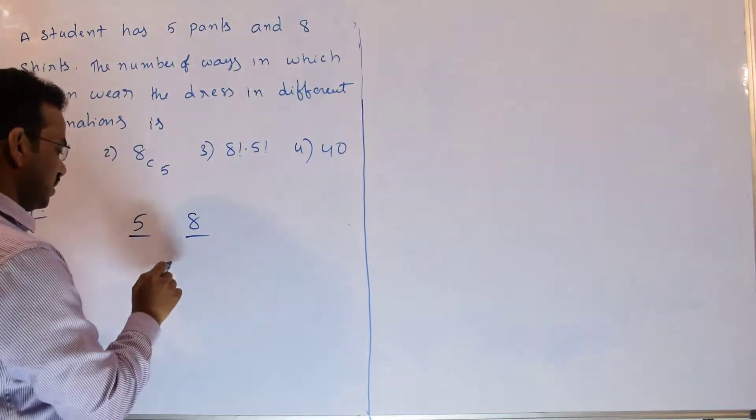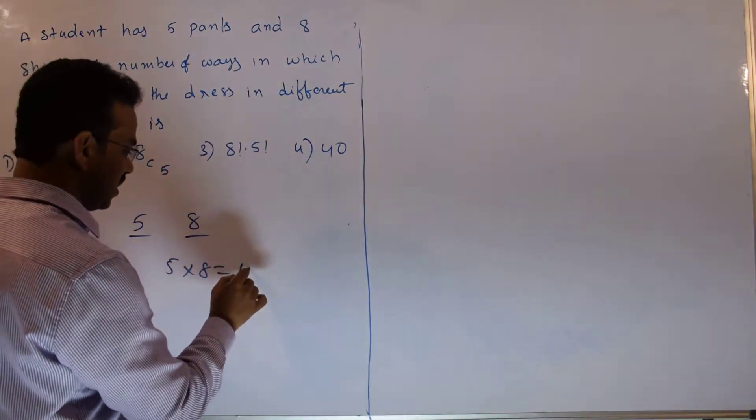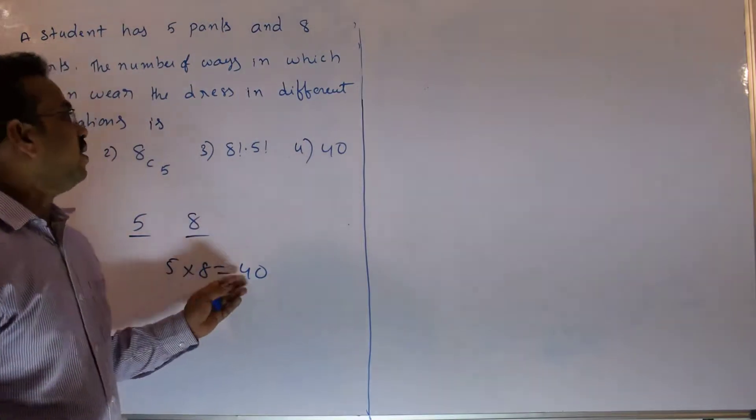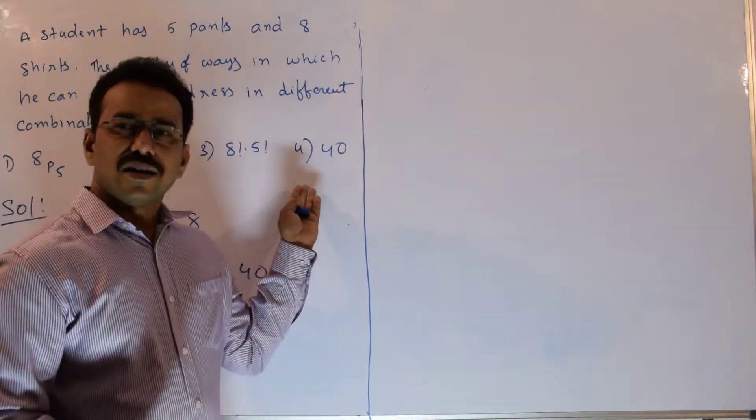Therefore, total number of ways equals 5 into 8, how many? 40 ways. So 40 ways you can choose the dress.